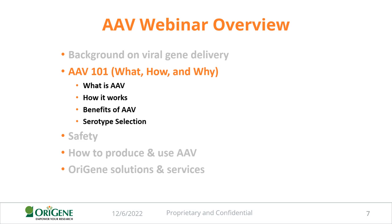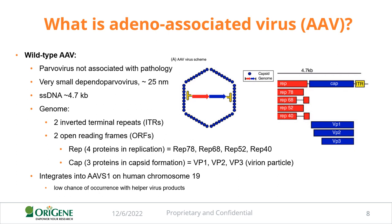AAV is a small, non-enveloped virus in the Parvoviridae family, including 12 different serotypes. It belongs to the genus Dependoparvovirus because it needs a helper virus — such as adenovirus — for replication and assembly. Studies have identified that AAV only needs certain helper virus products like E1A or E1B, which can be provided by a separate vector, so you don't necessarily need to add adenovirus itself.